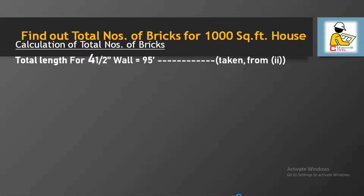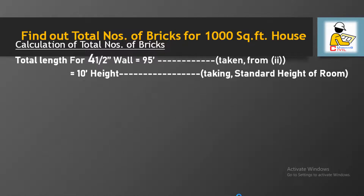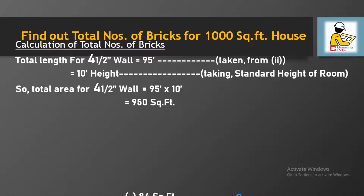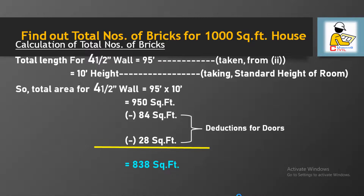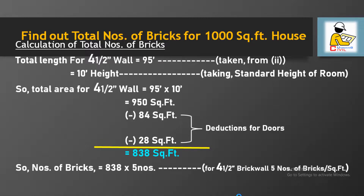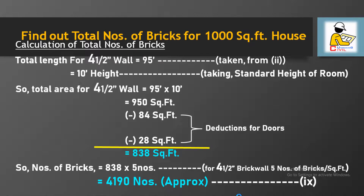For the 4.5 inch wall, the total length is 95 feet. Taking the standard 10 feet height, the gross area is 950 square feet. After deducting the door areas of the 4.5 inch walls, we get 838 square feet. Since 5 bricks are required per square feet for a 4.5 inch wall, multiplying 838 by 5 gives approximately 4,190 bricks.